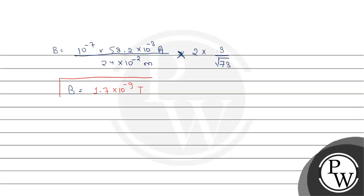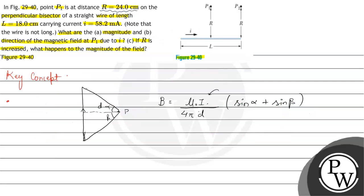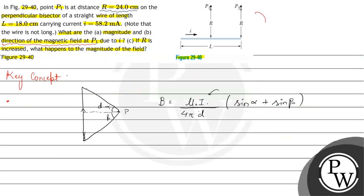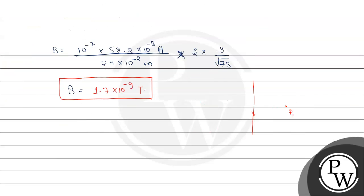In part B we are asked the direction of magnetic field at P1. Redrawing the diagram, we have a wire in which current is going downwards and point P1 is here. By the right hand thumb rule, the magnetic field will be going inside on one side and coming outside on the other side. So at P1 the direction of magnetic field will be outside the plane of paper.